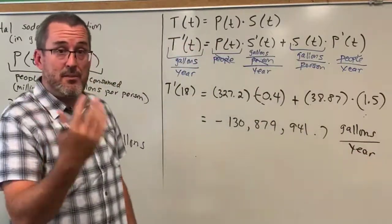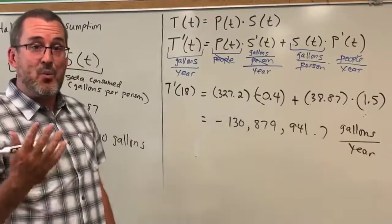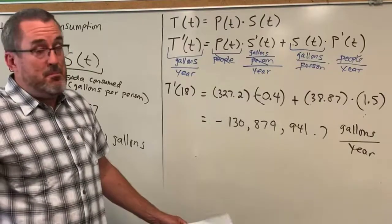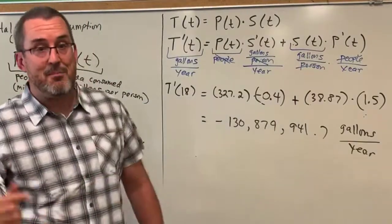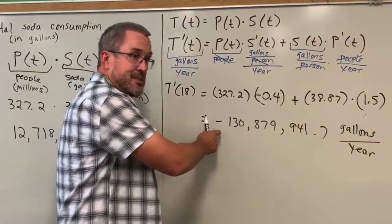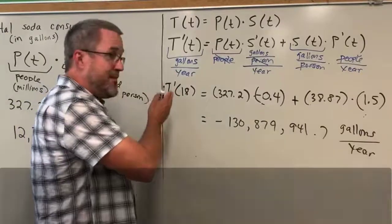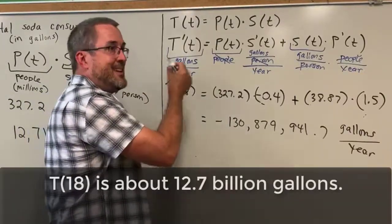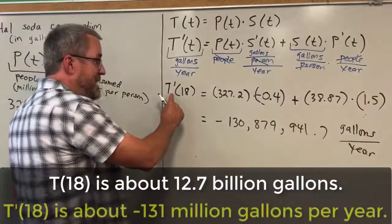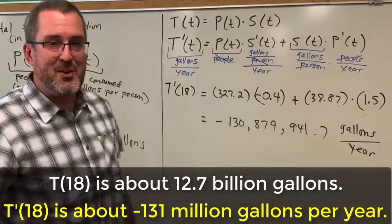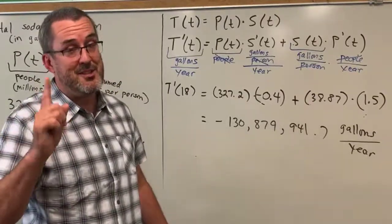Think about the units, the application of the product rule, what each piece means, and how we can apply calculus to a real-world setting. Soda pop manufacturers would care that total consumption is on a decreasing trend — they might ramp up marketing, change products, or do something to address this and continue to increase profits. So overall, T(18) was almost 13 billion gallons consumed in 2018, and the rate of change at that moment is a decrease of about 131 million gallons per year. The product rule helps us analyze the data and make meaningful decisions.